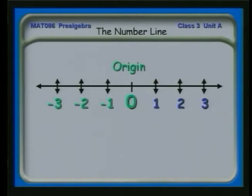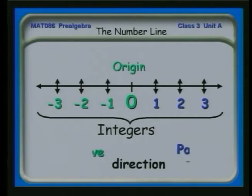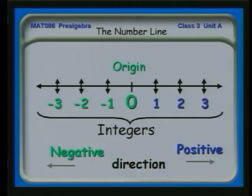We call the zero point the origin because it's where numbers originate, where numbers start. And we call both positive and negative numbers the integers. It's a specific name — when you say integers, you're talking about positive and negative numbers together as a group. Positive numbers increase to the right, and things get less and less as you go into more and more money that you owe as you go to the left.